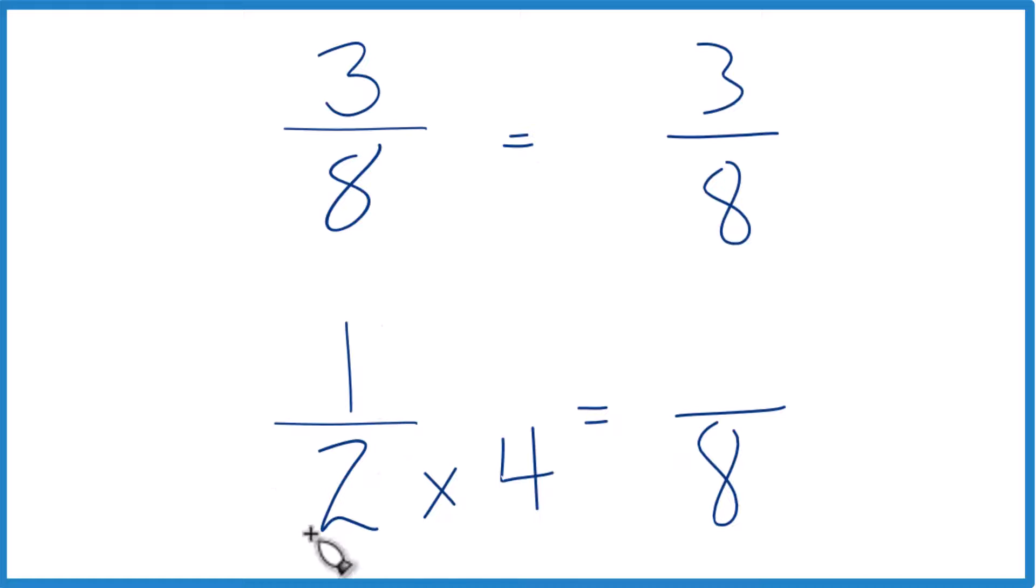But since I multiplied the denominator by 4 here, I've got to multiply the numerator by 4 as well. That's because 4 over 4, that just equals 1. So we don't change the value, just the way it's written.